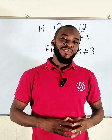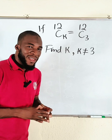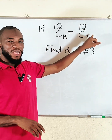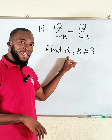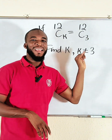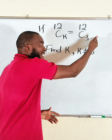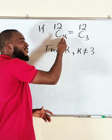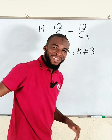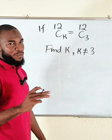Hello everyone. Let us provide a solution to this mind-blowing question. We are given that 12 combination k is equal to 12 combination 3, and we are asked to find the value of k, given that k is not equal to 3. How is this possible? We have 12 combination 3 already here — isn't that something supposed to be 3? So how is k not equal to 3?